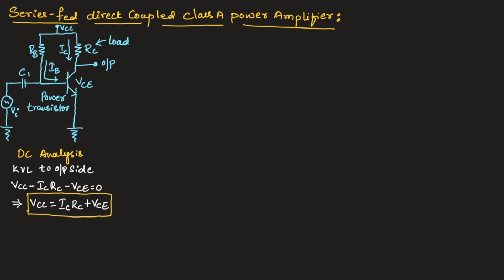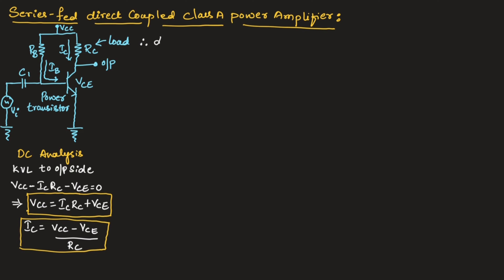From the above expression, we can write IC is equal to VCC minus VCE divided by RC. Therefore, the DC power input is given as P_IDC is equal to VCC into ICQ.